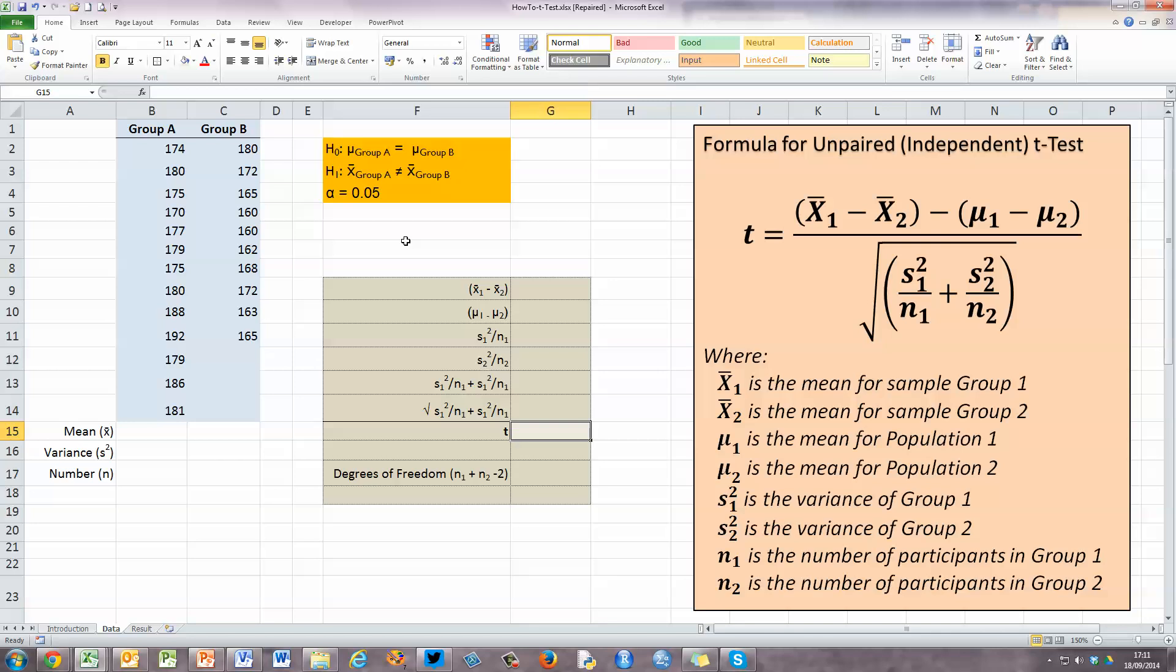And my alternate hypothesis is simply that the sample mean for group A is not the same as the sample mean for group B. And we're going to test this with an alpha value of 0.05, 95% confidence interval. So our data over here and our formula and our null hypothesis, we're ready to go to calculate the values for the t-test.